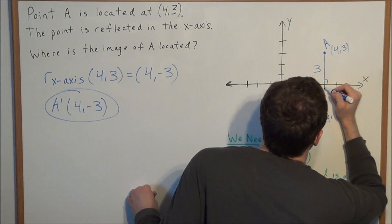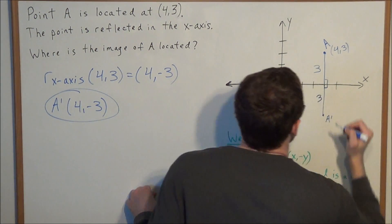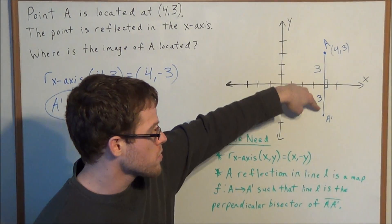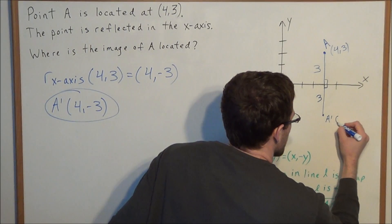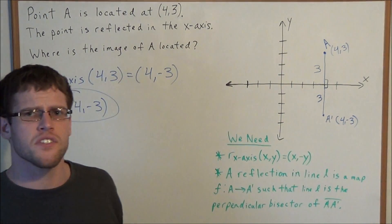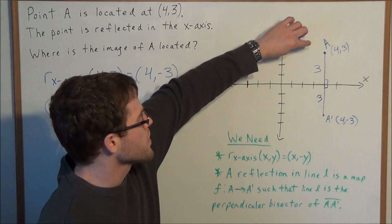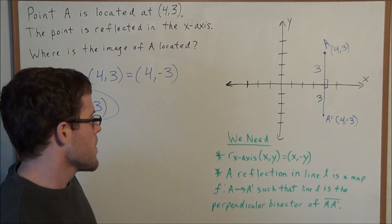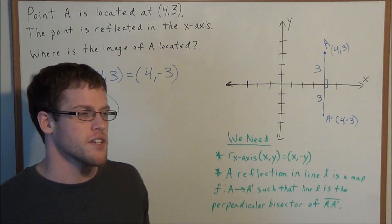So the length of this line needs to be 3 units long. If we're going over 4 units and then down 3 units, we're going to the point (4,-3). This is another way to figure out the image of A, just using our basic notion of what a reflection is.